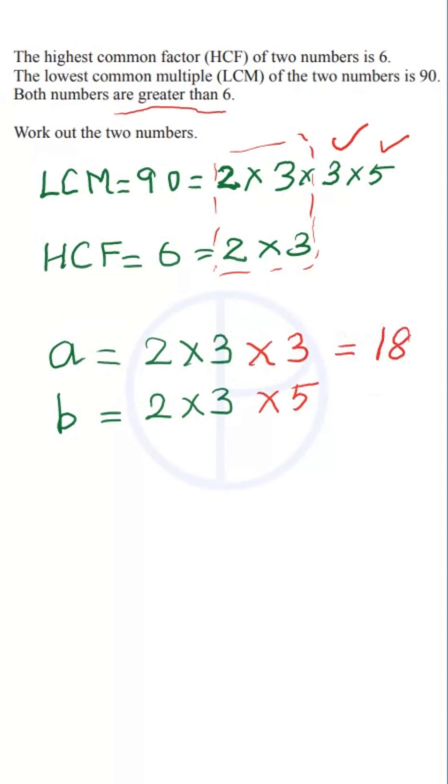Now a will become 18 and b will become 30. The LCM of 18 and 30 is 90 and the HCF of 18 and 30 is 6.